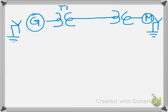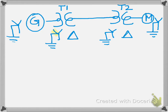Transformer T1 has a Y solid ground on the primary side and delta on the secondary side. Transformer T2 also has Y solid ground. Line L1 connects between them. The fault is on the generator side of transformer T1, so we mark that fault point as P. That completes the one-line diagram — part one is done.